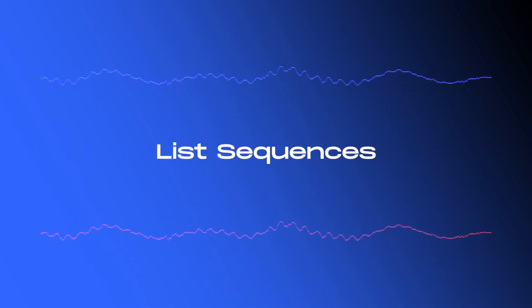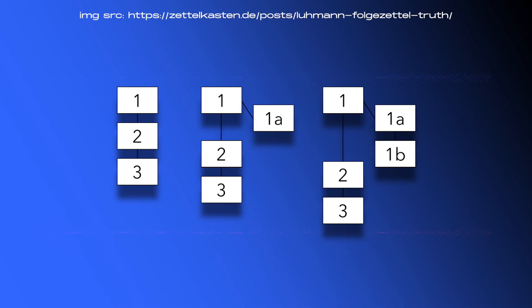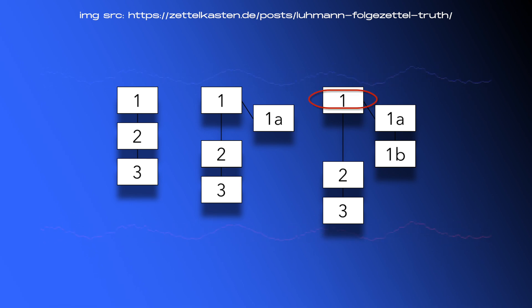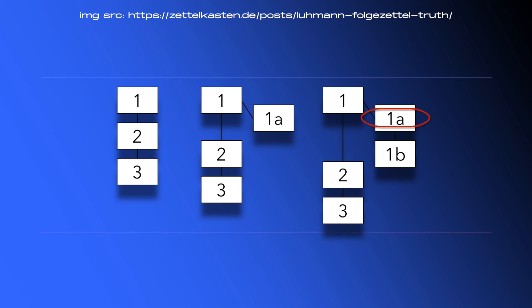Number three: list sequences, or folgezettel. What it is is actually very simple — it's a child note that branches off from an existing parent note. There's a very good article on zettelkasten.de about this topic which explains it in a lot more detail, and I'll link to that in the description. This is in fact an illustration taken from it. So: you're writing a note — Note 1. An idea comes to you which is related to Note 1, so you write Note 2. Then another idea comes to mind which is related to Note 1 but not to Note 2, so you branch off. You keep going and essentially create lists this way.